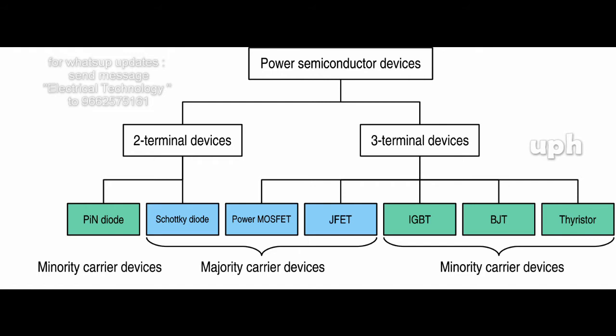Hi friends. Power electronic devices are solid state switches that work as a circuit switch. There is no mechanical movement - they act as a switch. Power diode, MOSFET (metal oxide semiconductor field effect transistor), BJT (bipolar junction transistor), IGBT (insulated gate bipolar transistor), thyristors. Through solid material, the flow of charge is confirmed in power electronics.